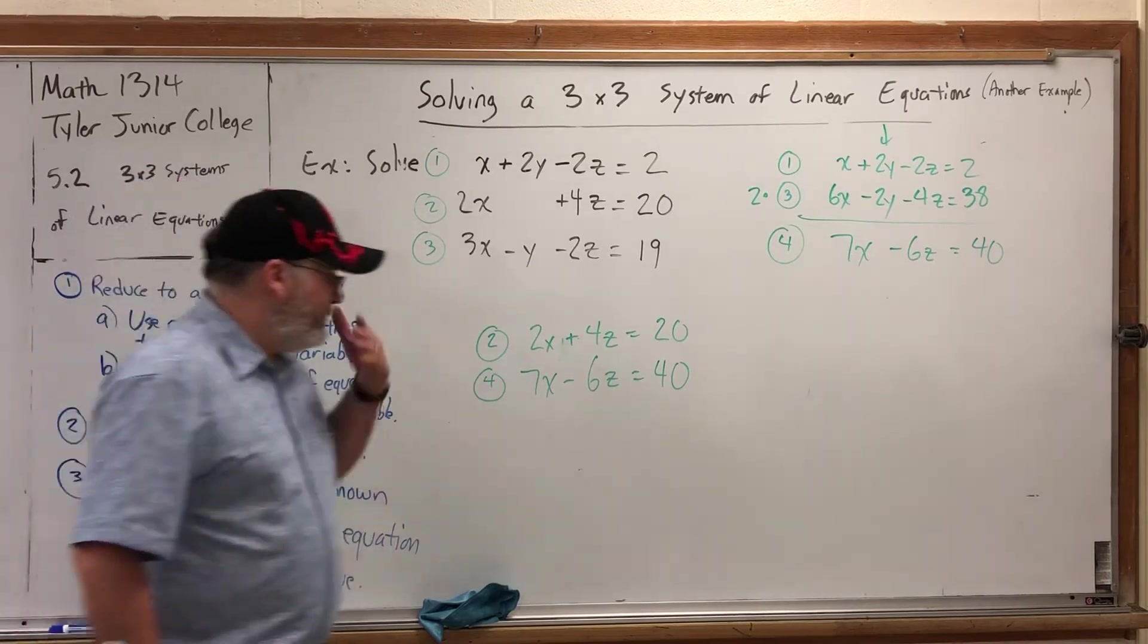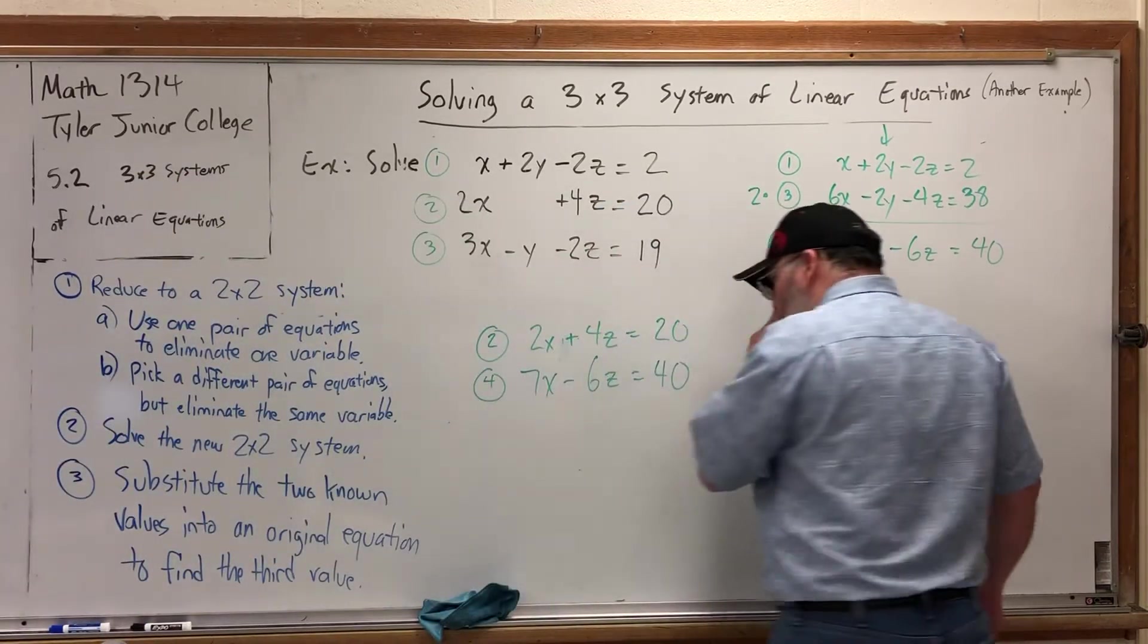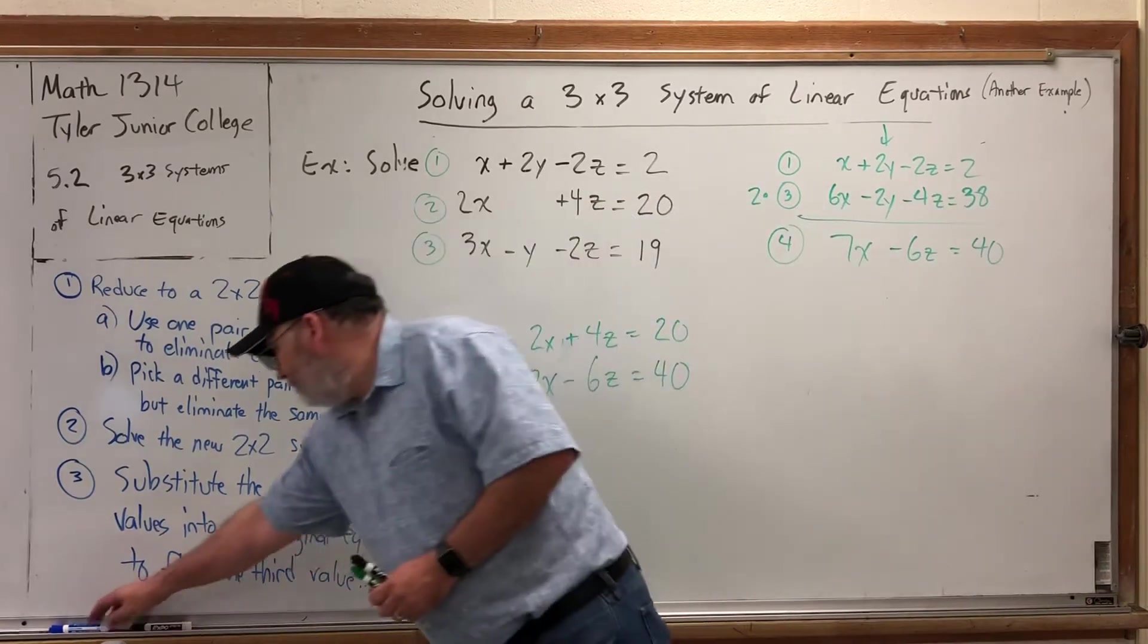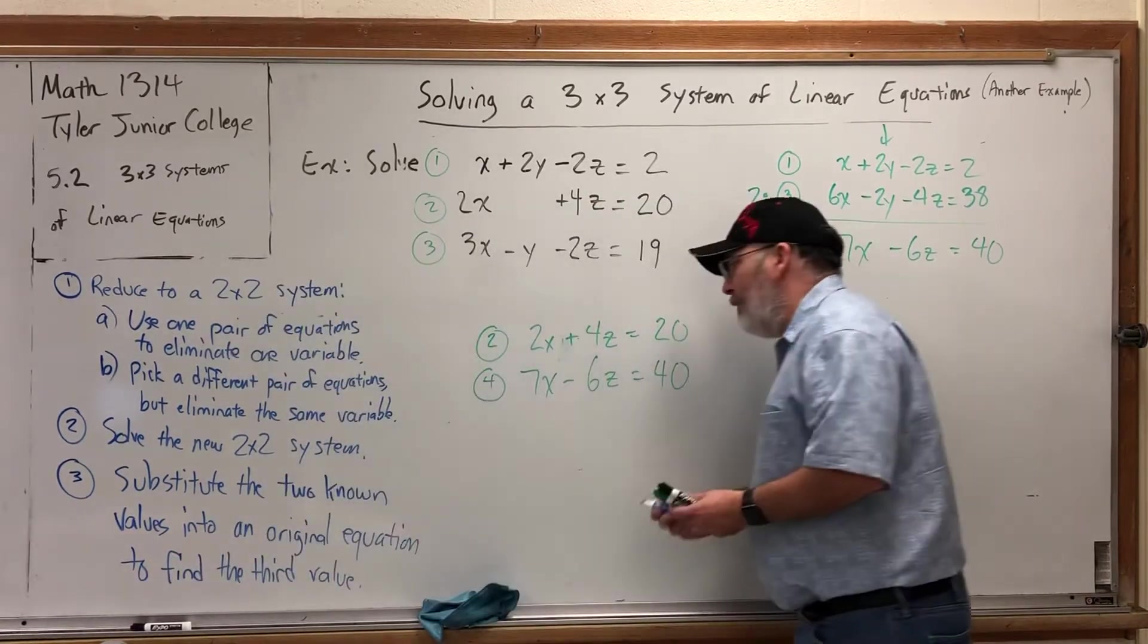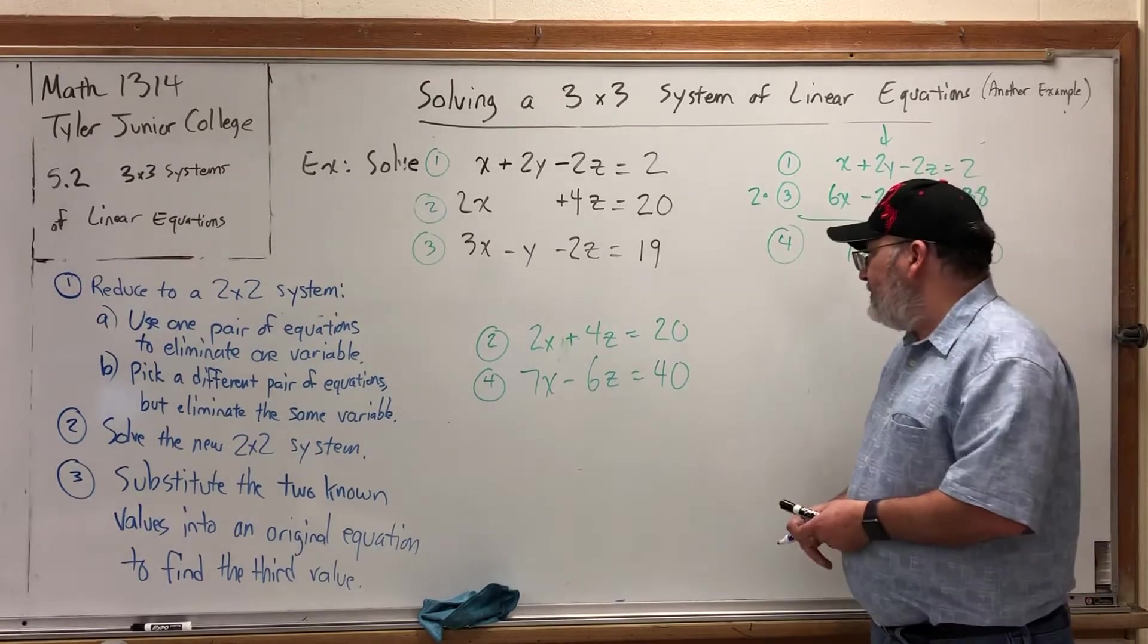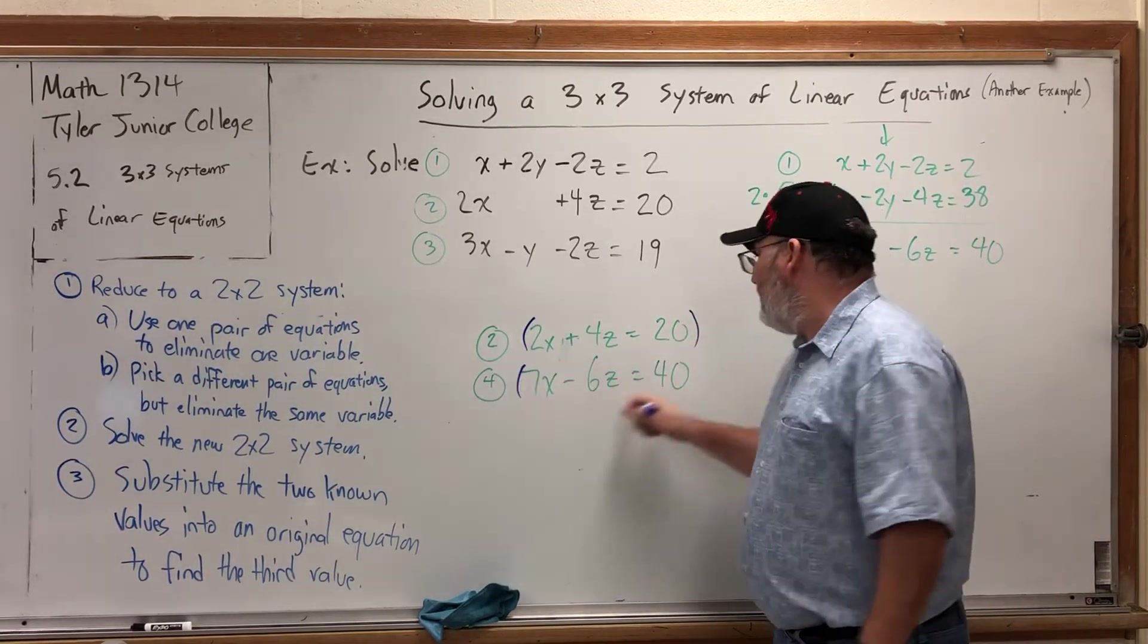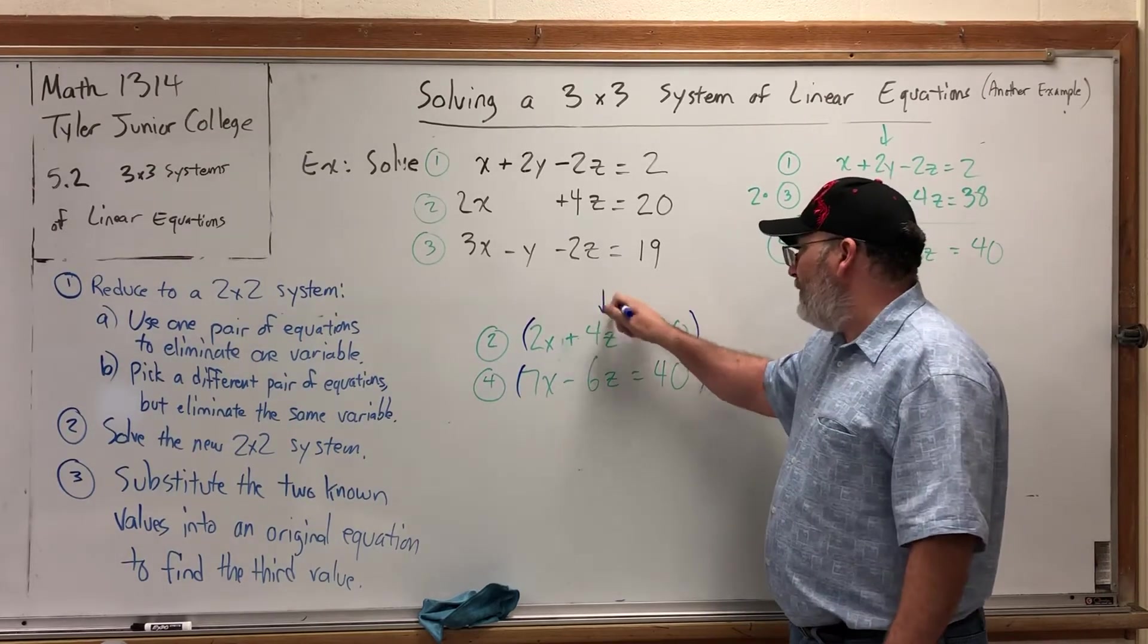Let's solve this 2x2 system. We need to pick some well-chosen numbers to multiply by. It doesn't matter which one we get rid of. Let's get rid of the z's. Why not the x's? I can get rid of the x's. I just have to pick something and go with it.